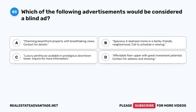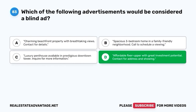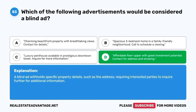Question 83. Which of the following advertisements would be considered a blind ad? A. Charming beachfront property with breathtaking views. Contact for details. B. Spacious 3-bedroom home in a family-friendly neighborhood. Call to schedule a viewing. C. Luxury penthouse available in prestigious downtown tower. Inquire for more information. D. Affordable fixer upper with great investment potential. Contact for address and showing. The correct answer is D. A blind ad withholds specific property details, such as the address, requiring interested parties to inquire further for additional information.